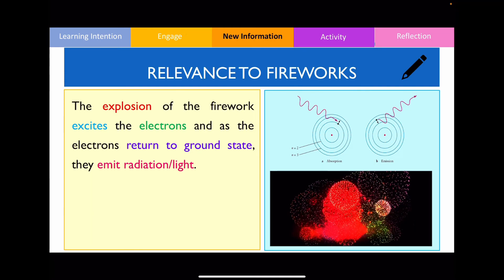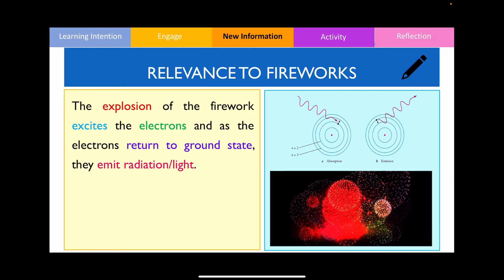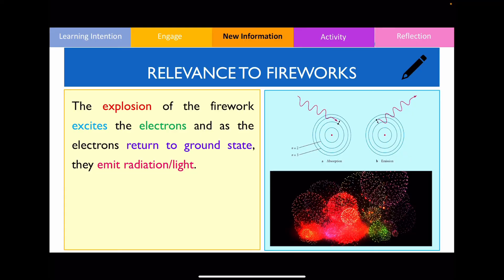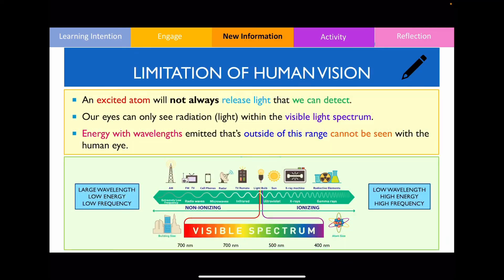It is through this process — where electrons absorb energy and then release energy — which causes the different flame colours to be observed in fireworks. The explosion of the fireworks excites the electrons, and as the electrons return back down to the ground state, they emit radiation within the visible light spectrum. By burning different chemicals in fireworks, this creates different fire colours. I would like to point out that burning any chemical will not always result in different lights being emitted, due to the limitations of human vision. Our eyes can only see radiation that's within the visible light spectrum.